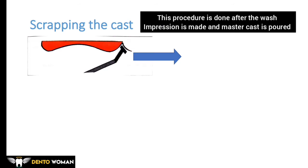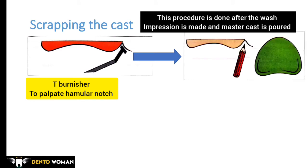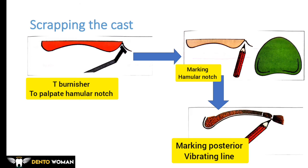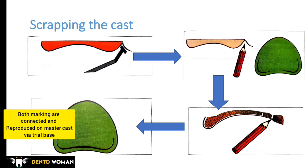In the scrapping method, first the hamular notch is palpated using a burnisher, as seen in the image. The hamular notch is then marked using an indelible pencil, and the posterior vibrating line is marked between the movable and immovable part of the soft palate. The line marked at the hamular notch is connected with the posterior vibrating line. The trial base is inserted into the patient's mouth so that the indelible markings are transferred to the trial base, and these markings can be refined if necessary. The trial base is then seated on the master cast to transfer the markings to the cast.